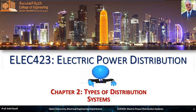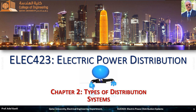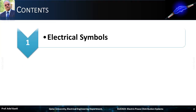In this chapter, we study the different types of distribution systems and networks. We will first review the typical electrical symbols used in the schematic diagrams of power distribution systems.